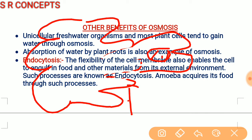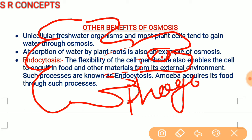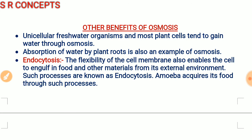This same kind of process also takes place in our immune system cells. Macrophages and neutrophils, like amoeba, keep making pseudopodia, and when they want to engulf bacteria or viruses they perform the same engulfing process — this is called phagocytosis.